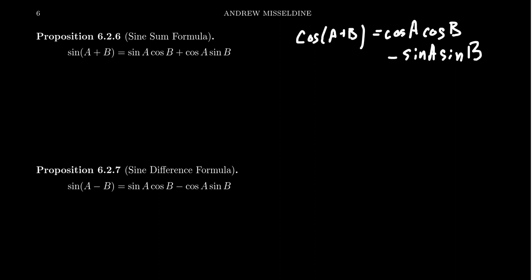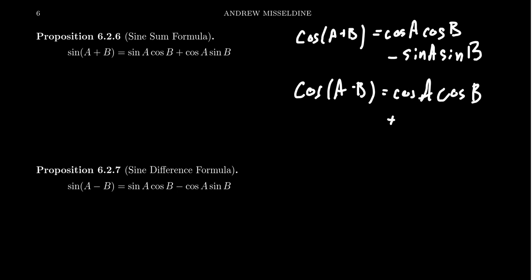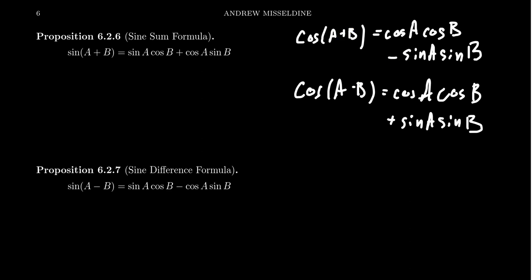Similarly, cosine of a minus b equals cosine of a times cosine of b plus sine of a times sine of b. So you'll notice there's a sign difference: when you have plus versus minus, this minus then becomes a plus — you switch the signs as you go between the two.